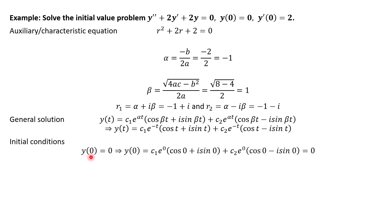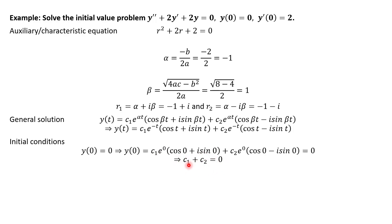Starting with the zeroth derivative initial condition — plugging in t = 0 should equal 0. Everywhere there's a t I'm putting 0 into our general solution and simplifying. We get c₁ + c₂ = 0, because e^0 = 1, cosine(0) = 1, and sine(0) = 0. So we have one equation with two unknowns, which means we definitely need a second equation to solve for c₁ and c₂.